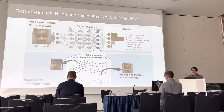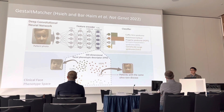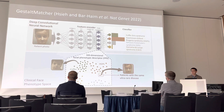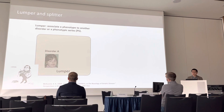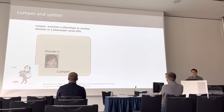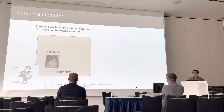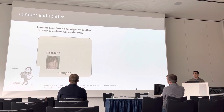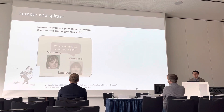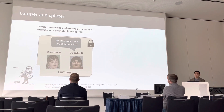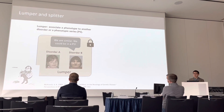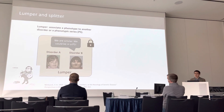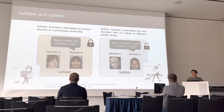Most importantly, we can quantify the similarity among different patients, allowing patient-level analysis. I will use the lumper and splitter as examples. The lumper means we associate one phenotype with another disorder — for example, if Disorder B is very similar to Disorder A, we associate Disorder B into the phenotypic series of Disorder A.